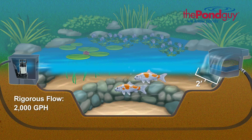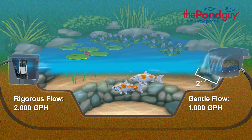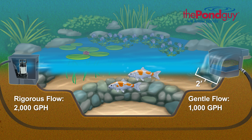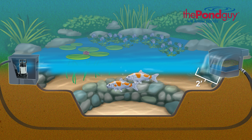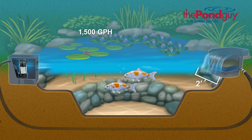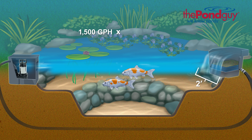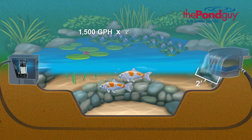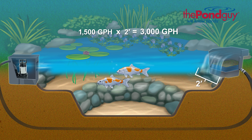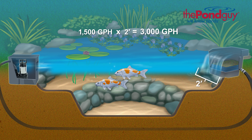For a more rigorous flow, go with 2,000 gallons per hour, and for a gentle flow, go with 1,000 gallons per hour. To continue our example, let's say we want an average flow, so we'll use 1,500 gallons per hour. Multiply 1,500 gallons per hour by your waterfall width of two feet for a total of 3,000 gallons per hour of water flow.